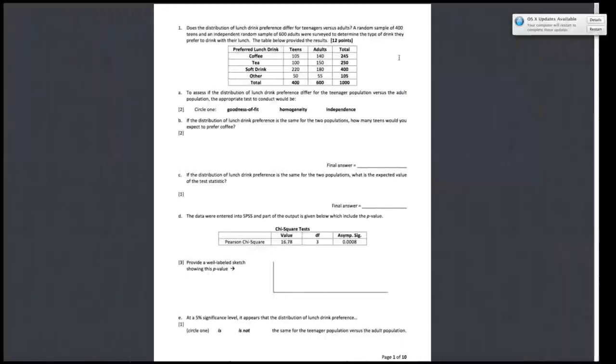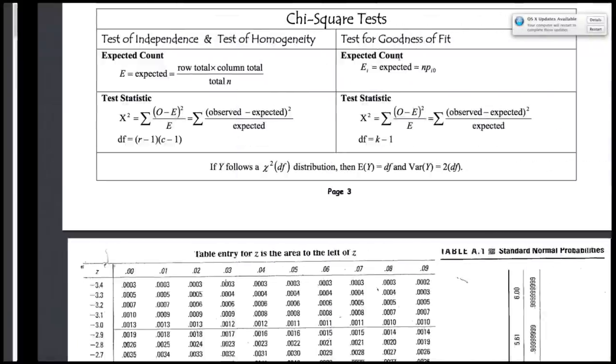The next question asks what is the expected value of the test statistic, again where we're assuming that their drink preference is the same for the two populations. We notice that the test statistic value is just the number of degrees of freedom.